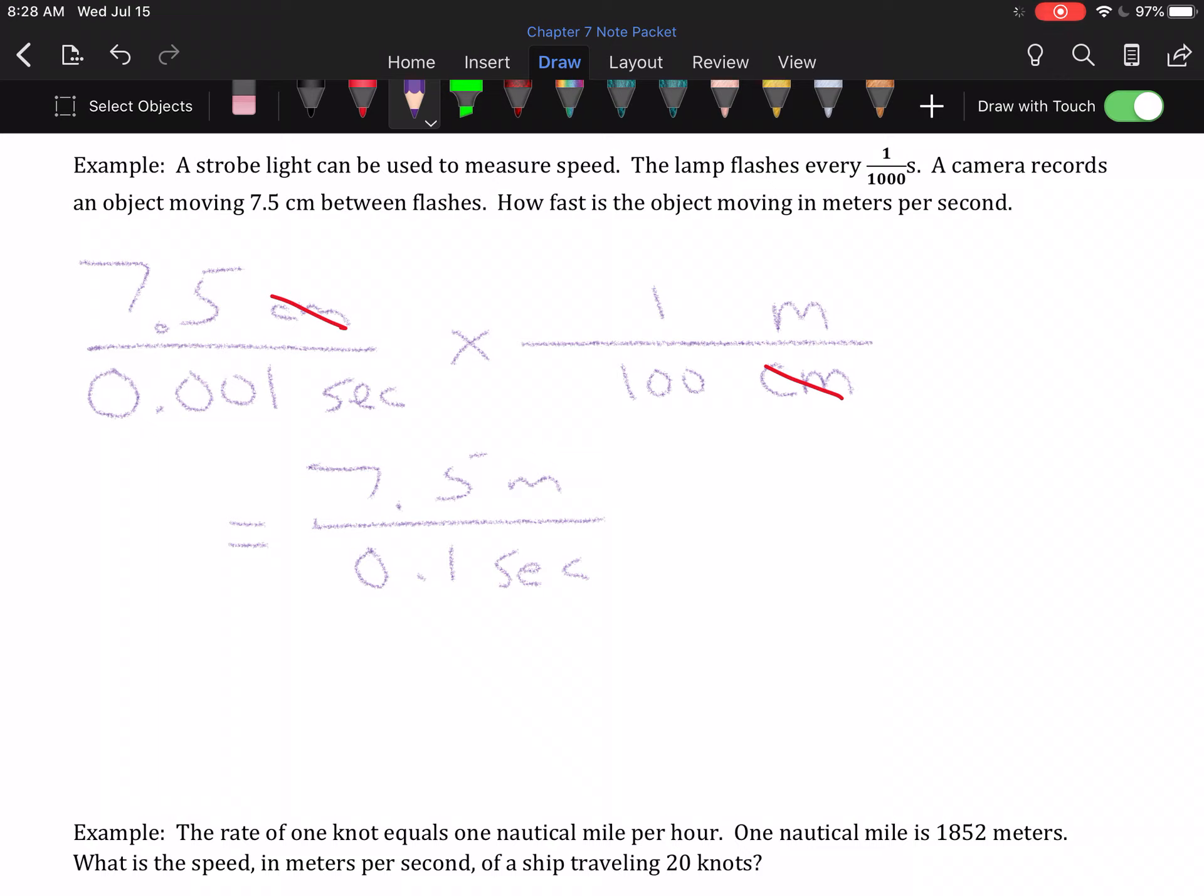So, I know I moved 7.5 meters in one-tenth of a second, but I'm asked how fast it's moving in meters per second, which means I actually have to do this division again. I have to make this a unit rate. So, we just do 7.5 divided by 0.1, and we realize it is 75 meters per second.